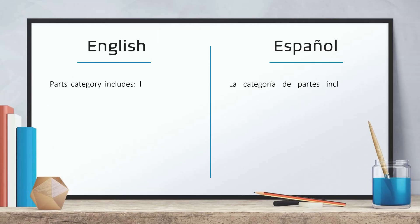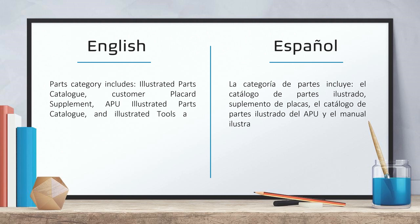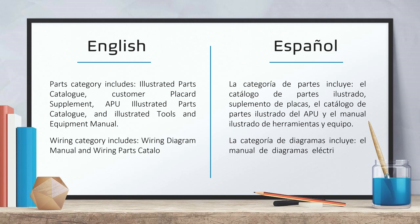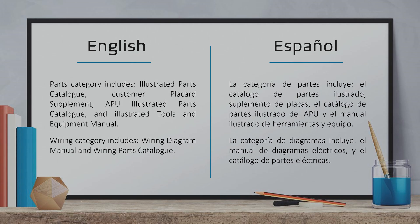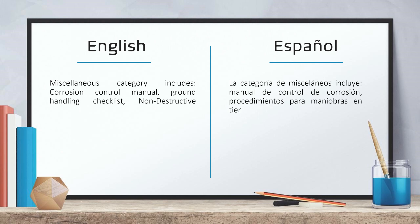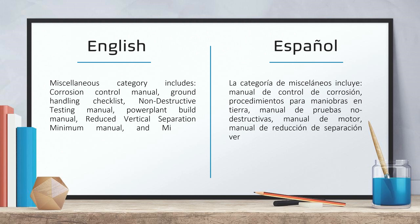The parts category includes illustrated parts catalog, customer placard supplement, APU illustrated parts catalog and illustrated tools and equipment manual. The wiring category includes wiring diagram manual and wiring parts catalog. The miscellaneous category includes corrosion control manual, ground handling checklist, non-destructive testing manual, power plant build manual, reduced vertical separation minimum manual and minimum equipment list.